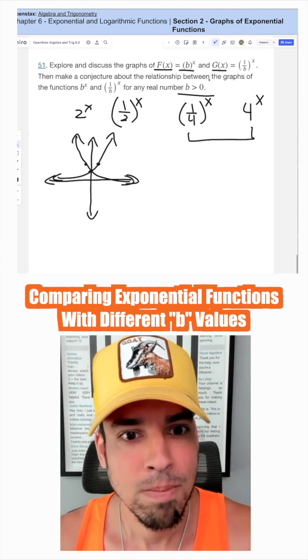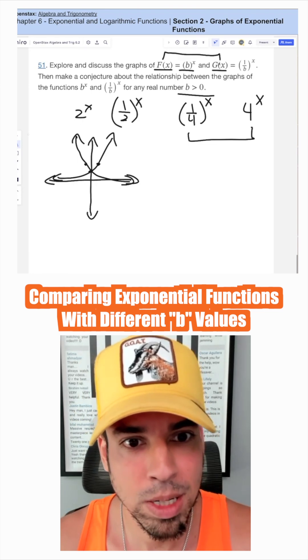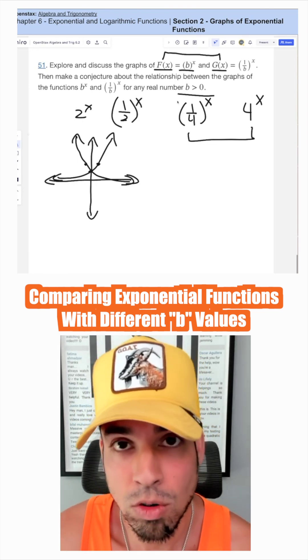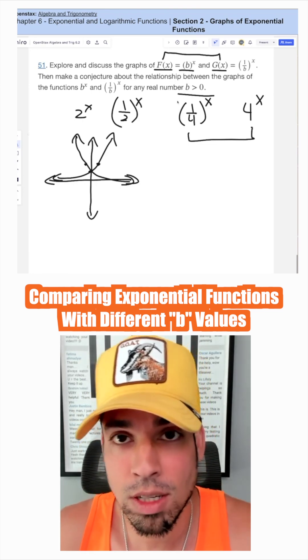So the idea is that f of x will be g of x, but reflected across the y axis and vice versa. That's how you do it.